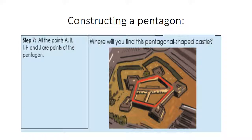Step number 7. All the points A, B, I, H, and J are points of the pentagon. Now where will you find a pentagon shaped castle?